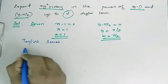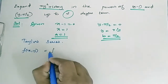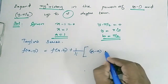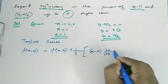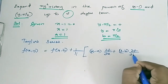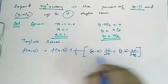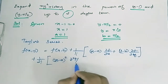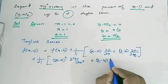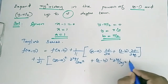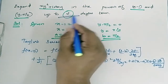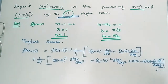Now Taylor's series: f(x, y) = f(a, b) + (1/1!) [( x − a) ∂f/∂x + (y − b) ∂f/∂y] + (1/2!) [(x−a)² ∂²f/∂x² + (y−b)² ∂²f/∂y² + 2(x−a)(y−b) ∂²f/∂x∂y] + … Only up till second degree terms.